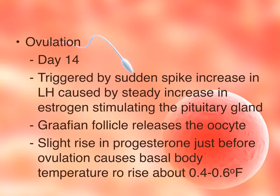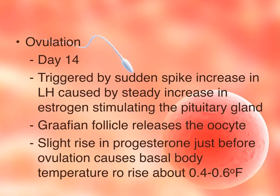The release of follicle-stimulating hormone by the anterior pituitary and the secretion of estrogen from the follicle itself causes the development of the follicle from primary to secondary follicle. As the follicle continues to mature, it steadily produces estrogen and small amounts of progesterone. Right around day 14, the Graafian follicle will release a mature oocyte, triggered by the increase in estrogen which causes a sudden spike of luteinizing hormone by the pituitary gland.